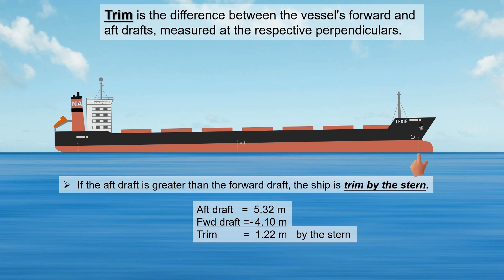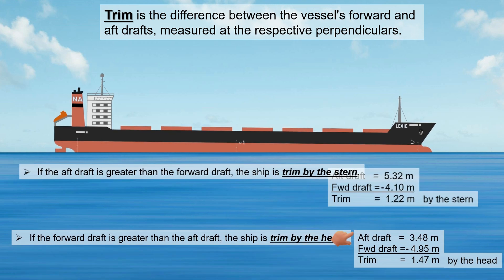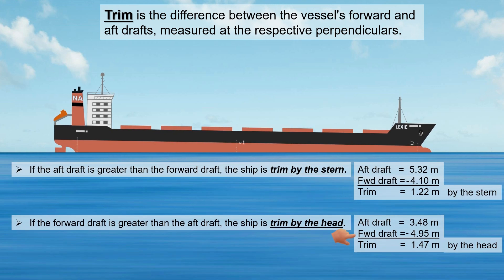As we observe, the ship's aft section appears more submerged than the forward section, indicating the vessel is trimmed by the stern. Now, if the forward draft is greater than the aft draft, the ship is trimmed by the head, or trimmed by the bow.